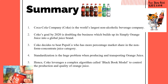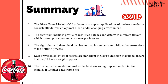Moving on to the summary, I have summarized the case applications into 10 points. Firstly, Coca-Cola Company is the world's largest non-alcoholic beverage company. Second, Coca-Cola by 2020 is doubling the business, which built out its Simply Orange juice into a global juice brand. Third, Coca-Cola's designs to beat PepsiCo will have a greater percentage market share in the not-from-concentrate juice category. Number four, standardization is a huge problem when producing and transporting orange juice. Number five, hence, Coca-Cola leverages a complex algorithm called the Black Book model to control the production and quality of orange juice.